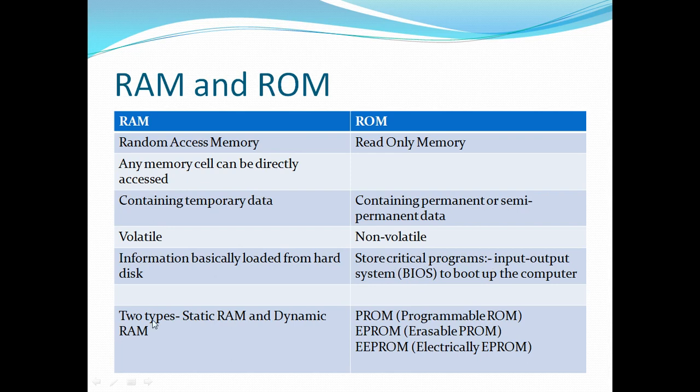Random access memory is of two types: static RAM and dynamic RAM. ROM types include PROM — programmable read only memory — and also read only memory variants.